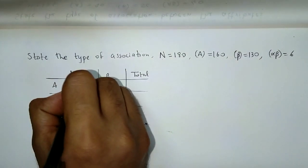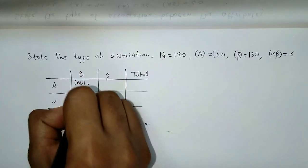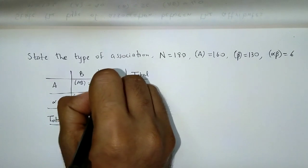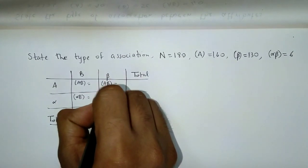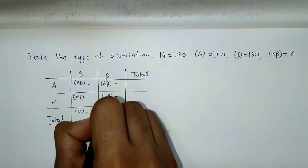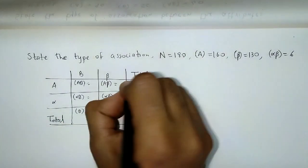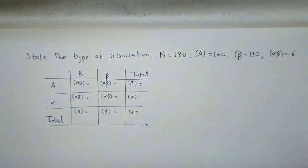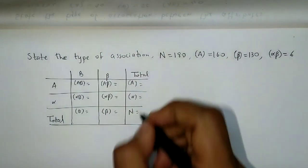So here, AB, this would be alpha B. Here it would be B total. Here alpha beta. Here alpha total. Here beta total. Here A frequency. Here alpha. And here N. Okay, so let's fill up the table quickly.